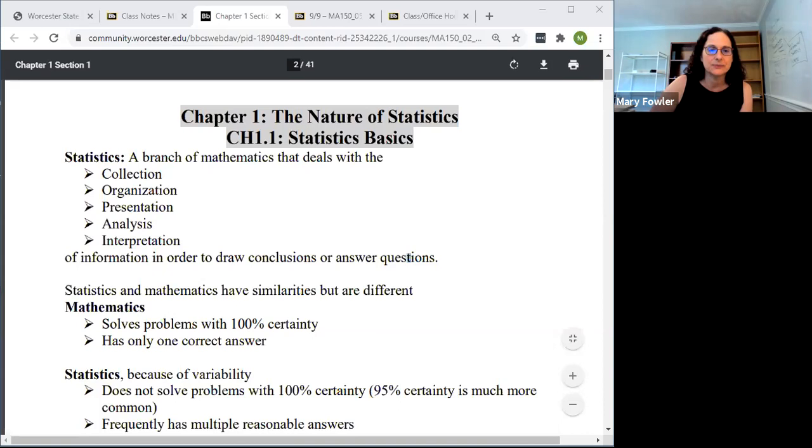The process of statistics we can break it down into four steps. The first step is to identify the research objective and the second step is to collect the information needed to answer the question. Those two steps sort of set us up for organizing and summarizing, which might be a lot of what we do in descriptive statistics. Then the inferential component allows us to draw conclusions from the information.